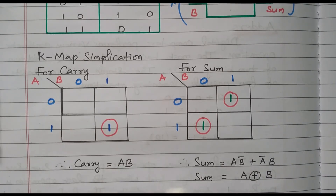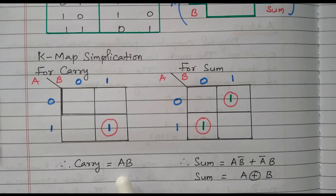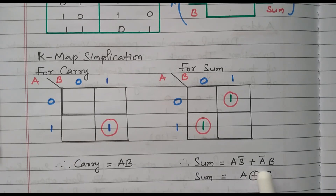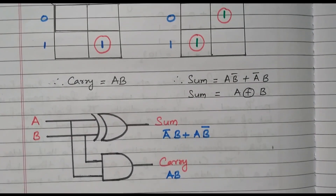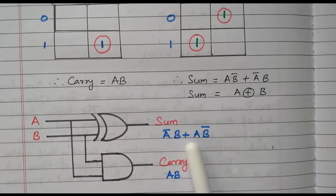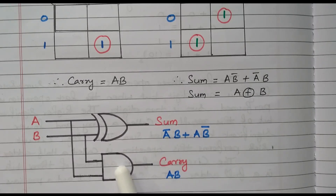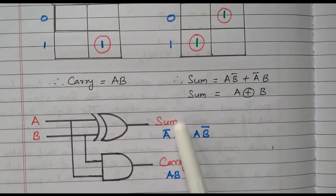We now have the expression: carry = AB, sum = A XOR B. In the normal implementation using XOR gate and AND gate: by using the XOR gate with inputs A and B, the output is A̅B + AB̅, which is the sum. Similarly, by using the AND gate with inputs A and B, it produces A·B, which is nothing but carry.